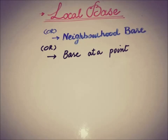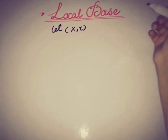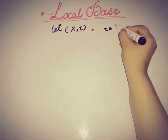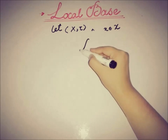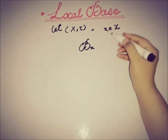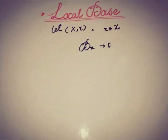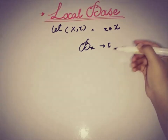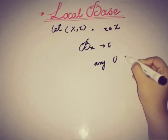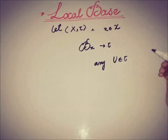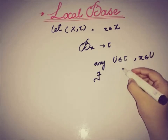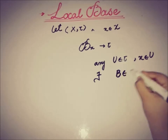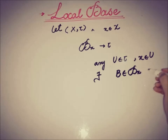Moving toward the definition of the local base: let X and tau form a topological space, and let x be a point from the space X. Then a sub-collection Bx of tau is said to be a local base, or base at a point x, if for any open set U with x belonging to U, there exists a B from that sub-collection such that...